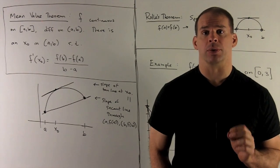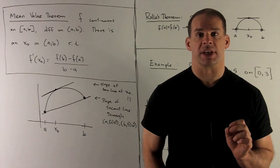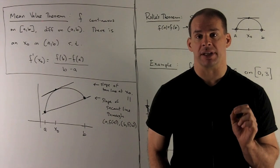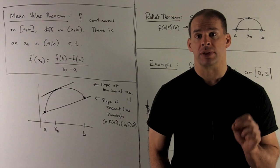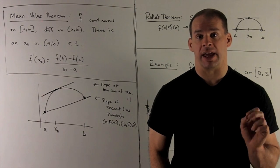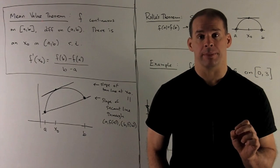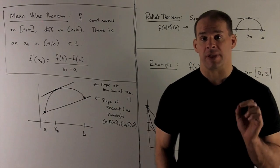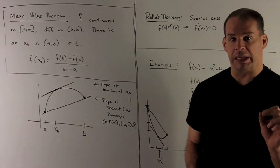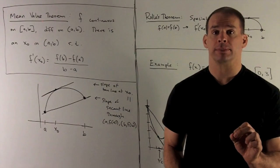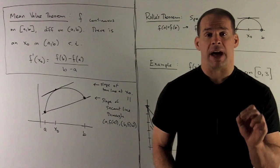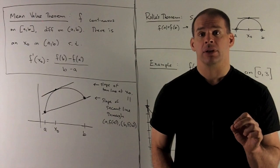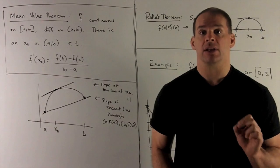From Rolle's theorem we get the Mean Value Theorem. This says: f is continuous on the closed interval [a, b], f is differentiable on the open interval (a, b) — meaning we can take the derivative at any point in the open interval — then we can compute the slope of the secant line through the endpoints: f(b) minus f(a) over b minus a, and we'll be able to find some point x₀ in the open interval such that f prime at x₀ equals that slope.